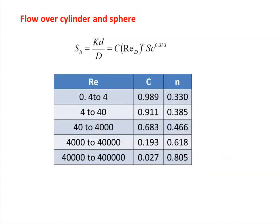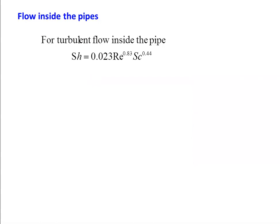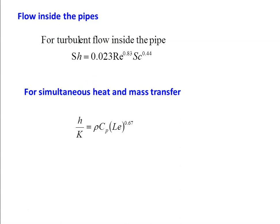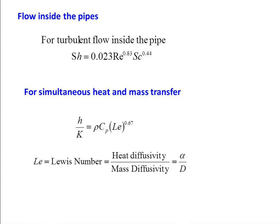For flow over a cylinder, the correlation is: Sh = Kd/D = C × Re^n × Sc^0.333, where the values of C and n are taken from a table. This equation is very much similar to Nu = C × Re^n × Pr^0.333 in heat transfer. For flow inside a pipe under turbulent flow (Re > 2300): Sh = 0.023 × Re^0.83 × Sc^0.44. For simultaneous heat and mass transfer, which occurs in the majority of applications: h/K = ρ × Cp × Le^0.67, where the Lewis number Le = α/D represents heat diffusivity divided by mass diffusivity.